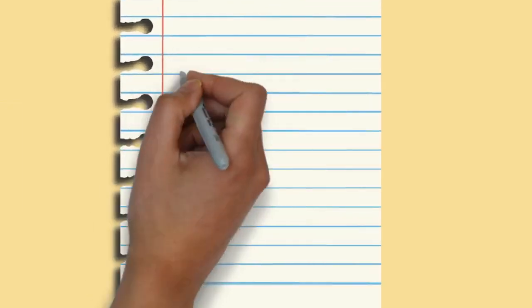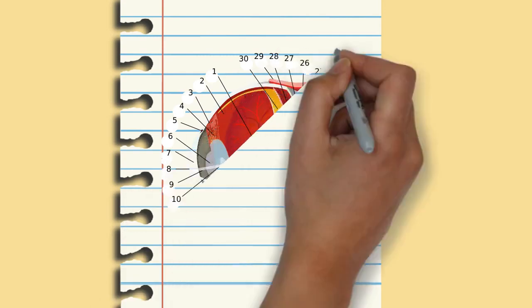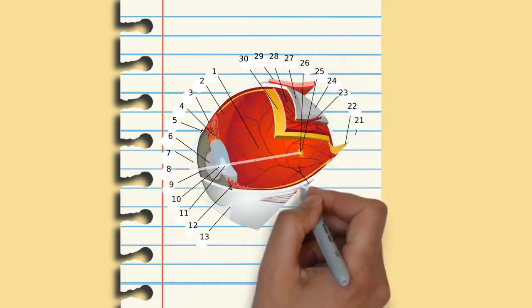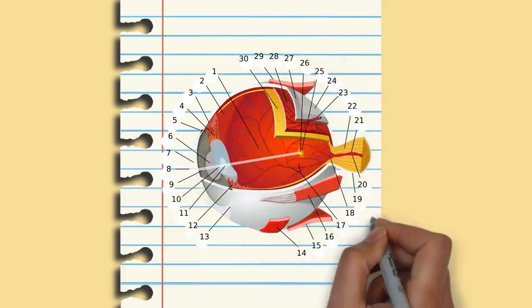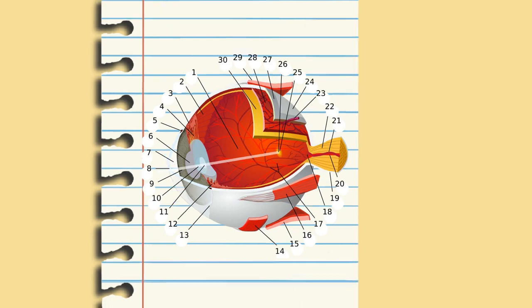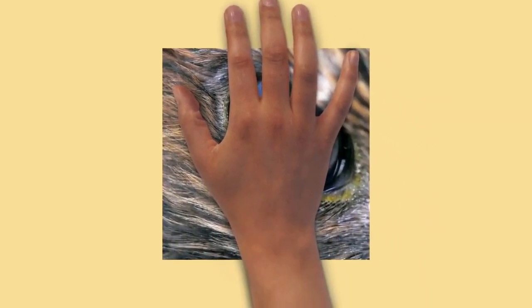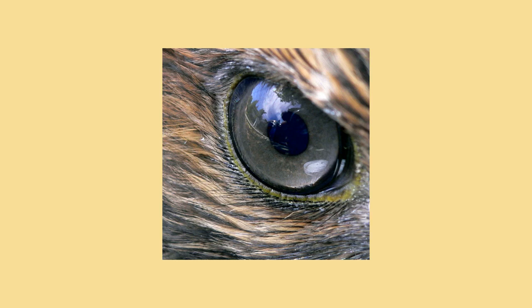The ciliary body is triangular in horizontal section and is coated by a double layer, the ciliary epithelium. The inner layer is transparent and covers the vitreous body, and is continuous from the neural tissue of the retina. The outer layer is highly pigmented, continuous with the retinal pigment epithelium, and constitutes the cells of the dilator muscle. The vitreous is the transparent, colorless, gelatinous mass that fills the space between the lens of the eye and the retina lining the back of the eye. It is produced by certain retinal cells.